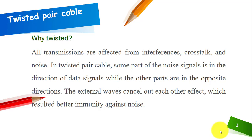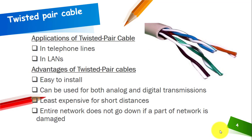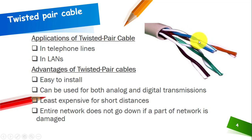Here you can see the twisted pair cables on your right — these are the insulated copper wires twisted around each other. The applications of twisted pair cable include use in telephone lines and in LANs, that is, local area networks.